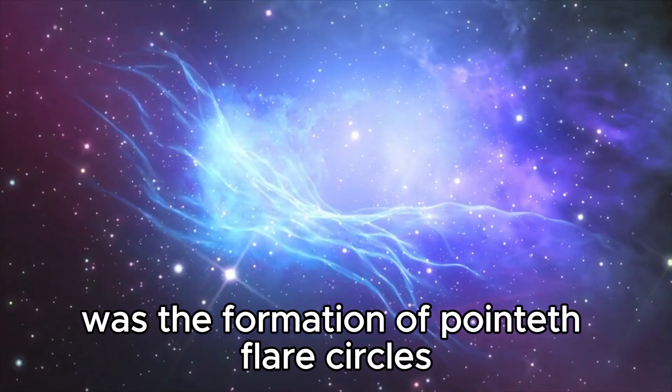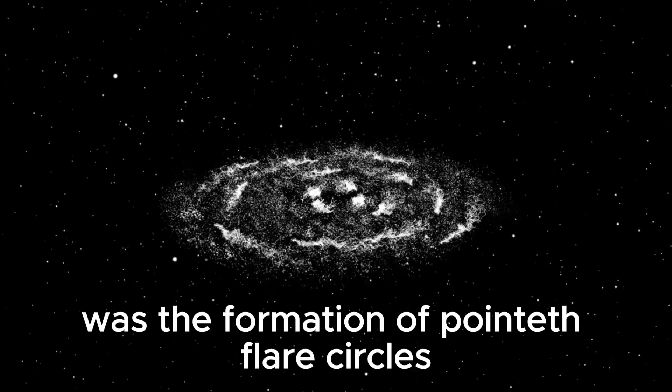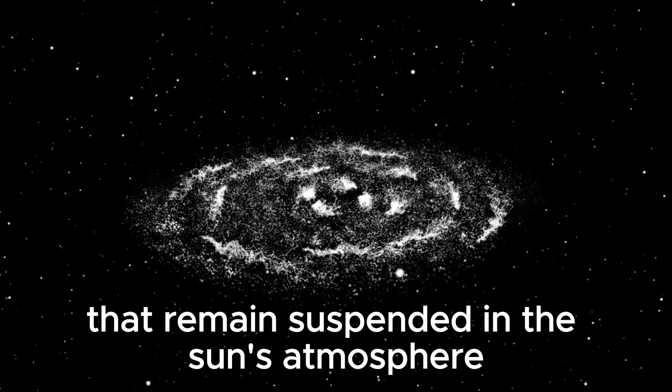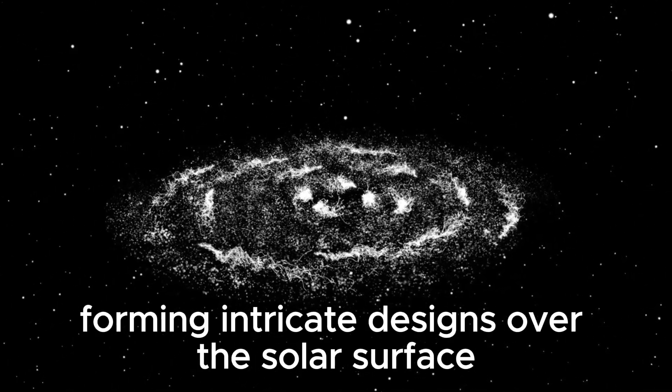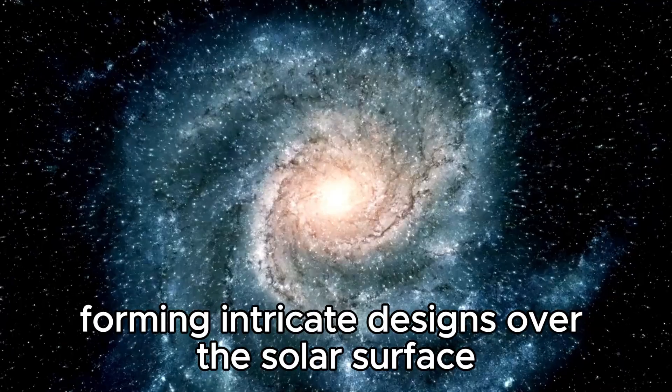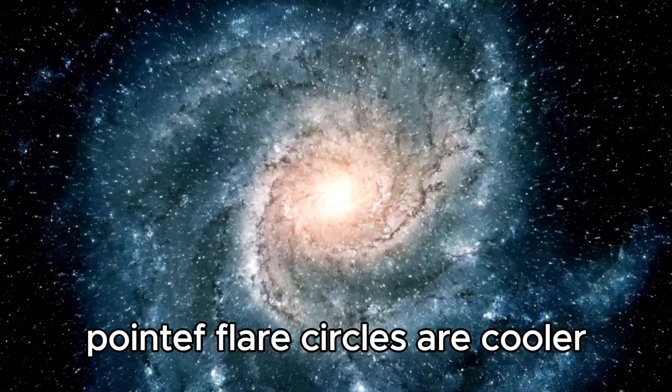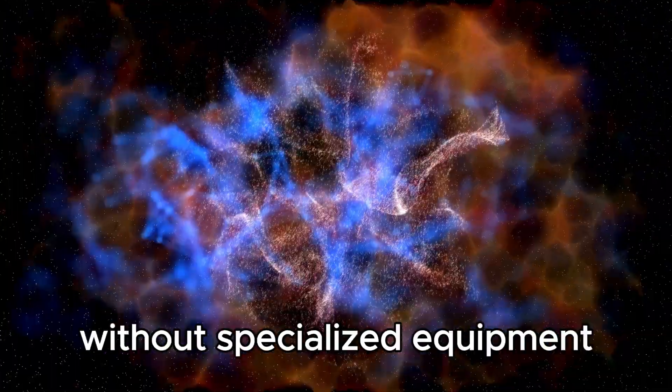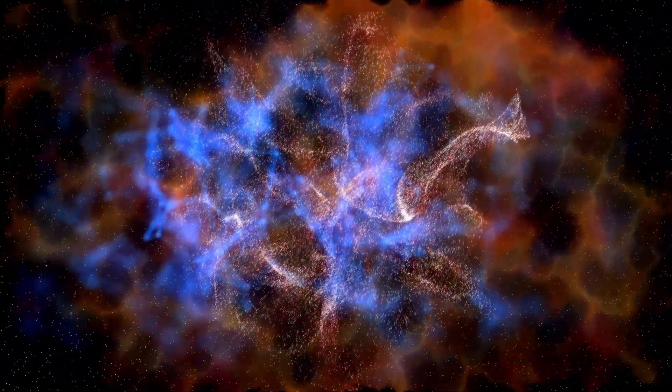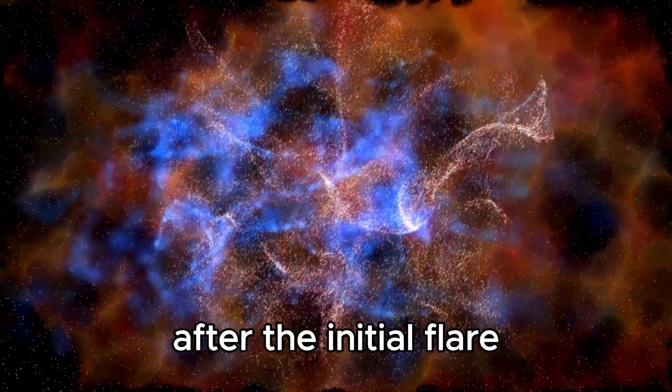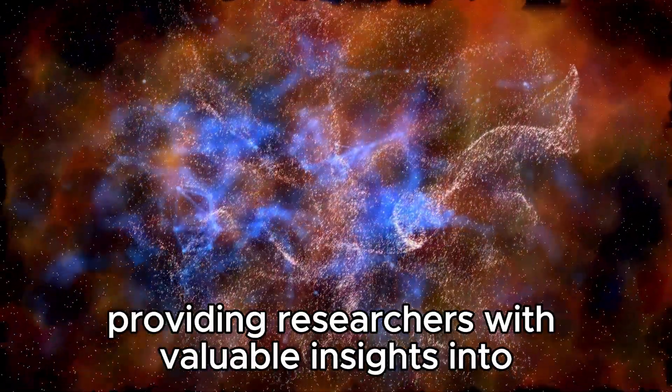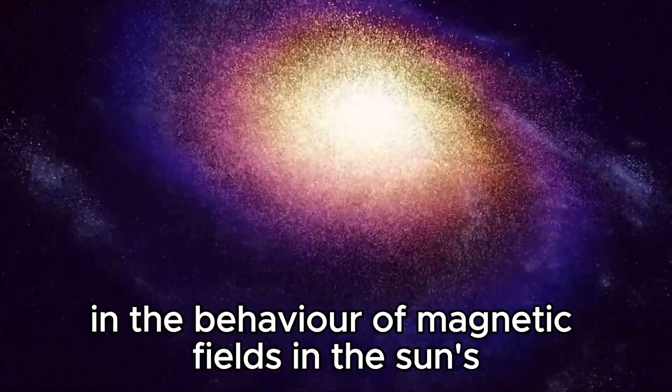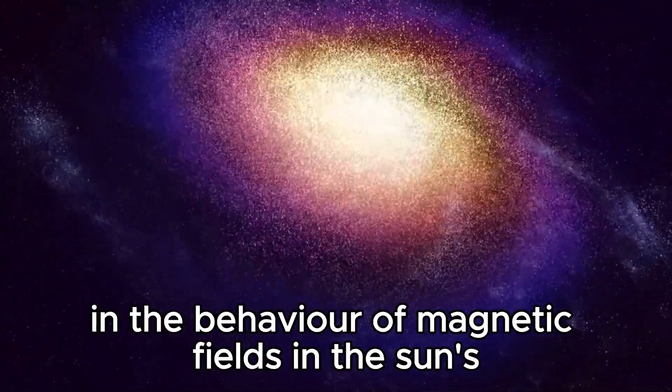One of the fascinating phenomena observed after the solar flare was the formation of post-flare circles. These are residual patterns of plasma that remain suspended in the sun's atmosphere, forming intricate designs over the solar surface. Post-flare circles are cooler and dimmer than the surrounding solar atmosphere, making them challenging to observe without specialized equipment. They can persist for hours to days after the initial flare, providing researchers with valuable insights into the dynamics of solar eruptions and the behavior of magnetic fields in the sun's atmosphere.